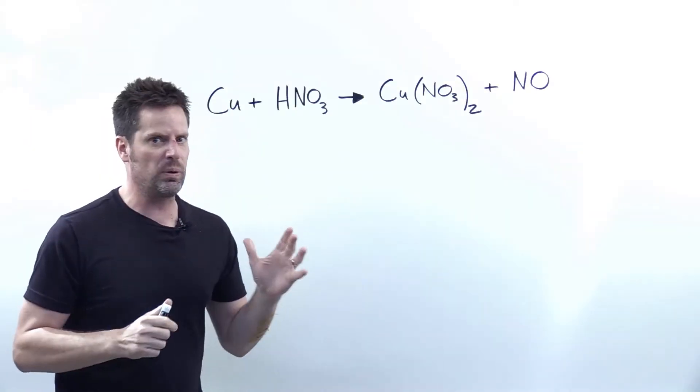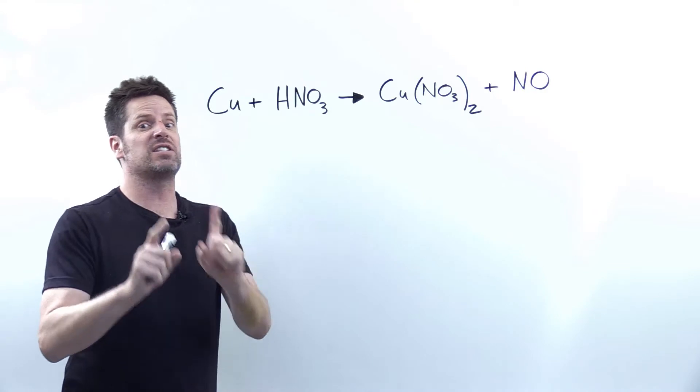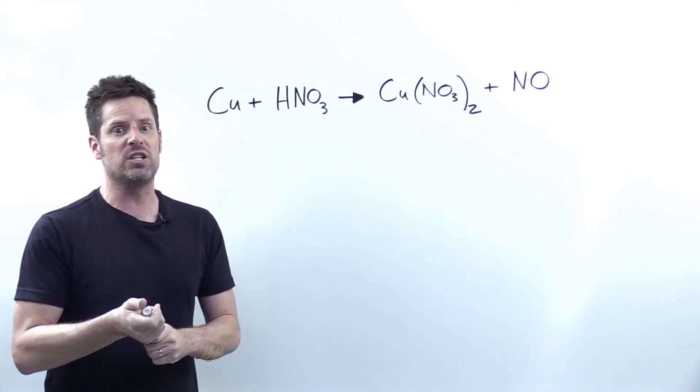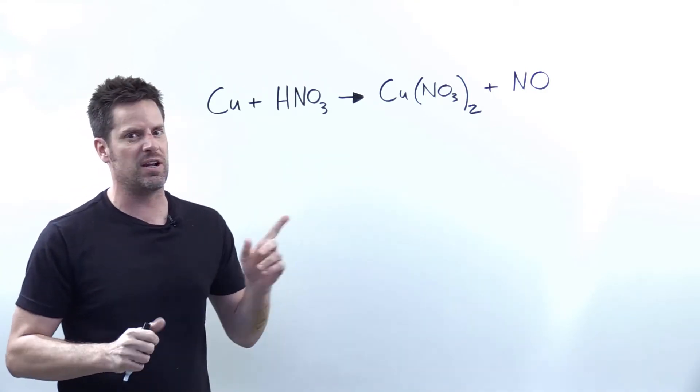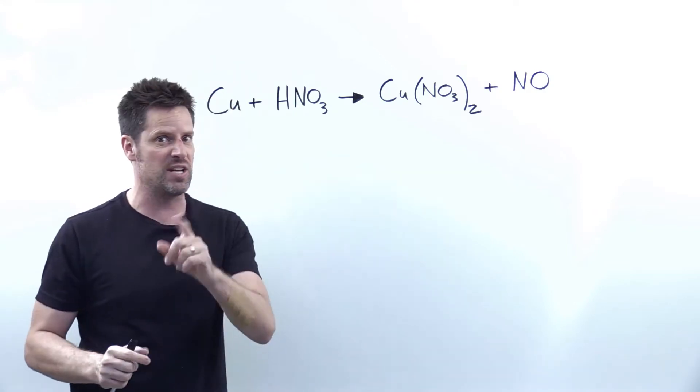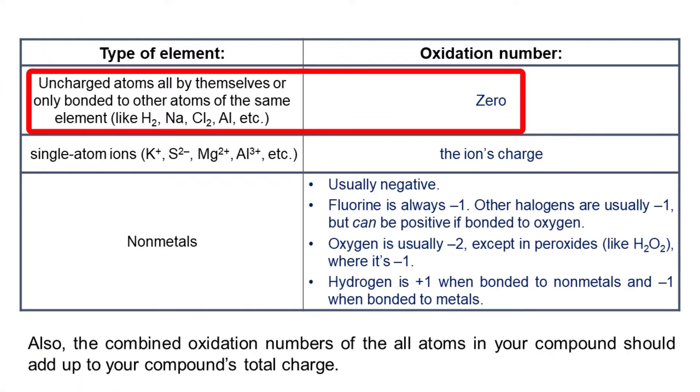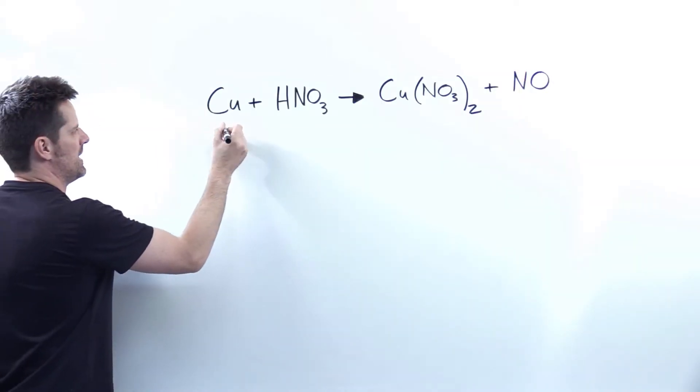Now, first step in this whole process is figuring out who gets oxidized and who gets reduced. To do that, we need to identify the oxidation numbers of everything on the board, or at least as many as is necessary. According to our rules right here, anytime you have an atom that's all by itself with no charge, its oxidation number is zero, and that applies to our copper right here.